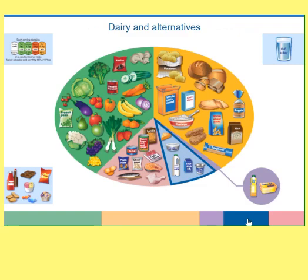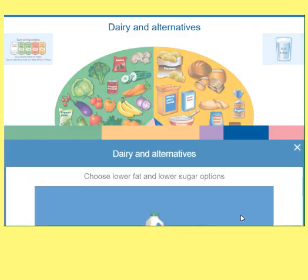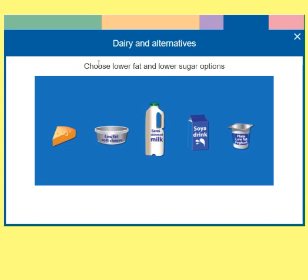The next section is dairy and alternatives. It says we have options to choose lower fat and lower sugar options — things like cheese, or alternatives such as soya or oat milk that can be used as a replacement if you have allergies or just prefer the taste of that kind of milk.